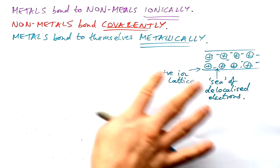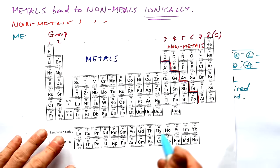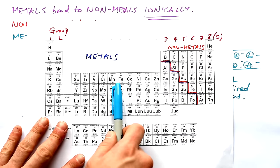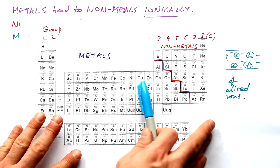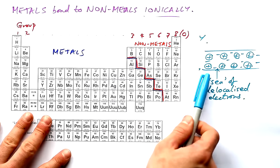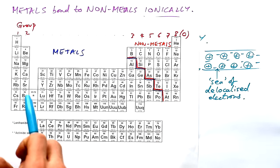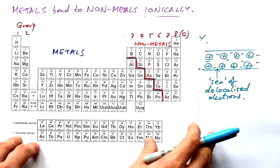So we can forget about metallic bonding. Pick any metal — let's take iron. If you have a bunch of atoms and stick them together, they will form this positive ion lattice with a sea of delocalized electrons.